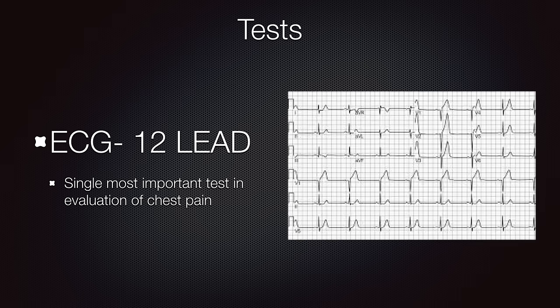What we'll often see in patients having a myocardial infarction is flipped or flattened T waves, ST elevation, or Q waves. But sometimes you won't see any changes on the EKG, and given their other comorbidities, you have to do other tests which will indicate that the patient is actually having a non-ST elevated myocardial infarction, and that leads to cardiac markers.